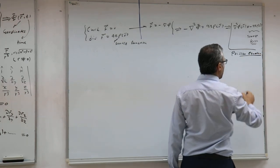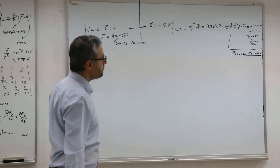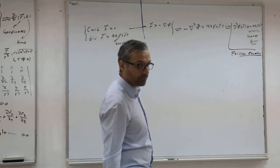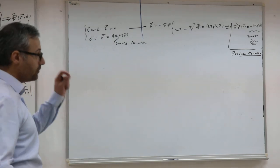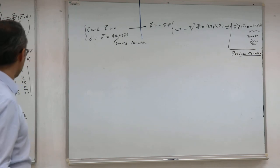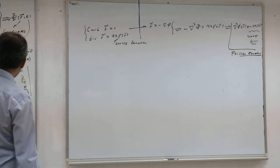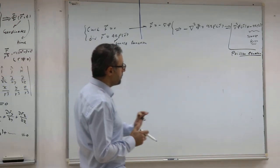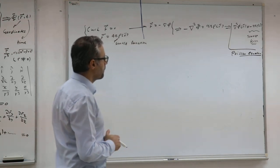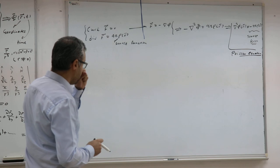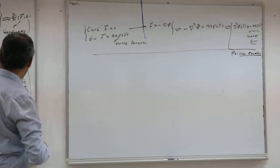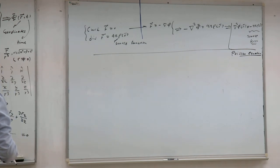You will see the Poisson equation in different areas of physics — for example in electromagnetism, where rho is the density of charge. Is there a relation between the solution of the Laplace equation and the Poisson equation? Yes. If you find the solution of the Laplace equation, you can find the solution of the Poisson equation. We will study the solution of this equation. Not only the Laplace equation is important for potential theory — a more general class of equations matters too.